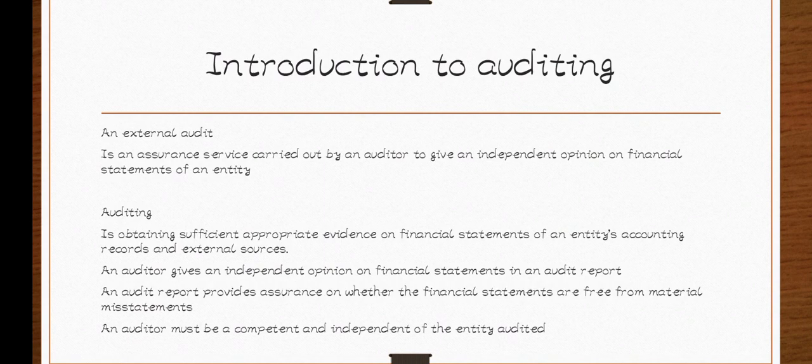The auditor gives an independent opinion on the financial statements of an entity. Financial statements include things like the income statement, the statement of financial position, the cash flow statement, and the statement of changes in equity. Financial statements are prepared by the accountants or internal auditors — people within the organization — and then they hire an auditor from outside to come and examine those statements.